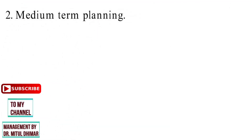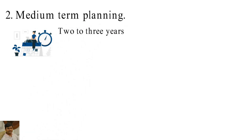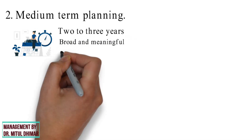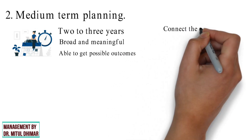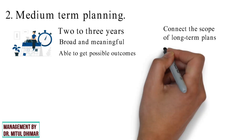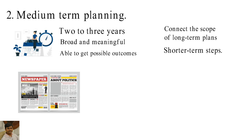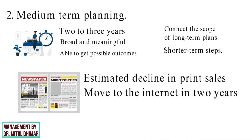Medium-term planning covers a timeframe of approximately 2 to 3 years — long enough to be broad and meaningful, but short enough to be specific about possible outcomes. Medium-term goals connect the scope of long-term plans with the concrete detail of shorter-term steps. For example, a newspaper's medium-term plan may point to an estimated decline in print sales over the next 2 to 3 years, with recommendations for a complete move to the internet in 2 years, focusing on online advertising revenue.